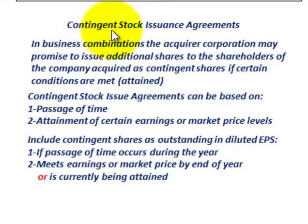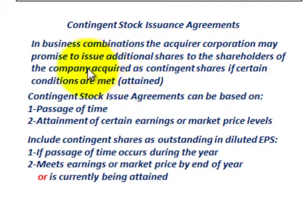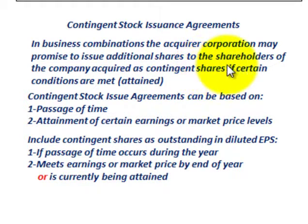Let's look at contingent stock issuance agreements. In business combinations, the acquiring corporation — in this case Corporation A — may promise to issue additional shares to the shareholders of the company being acquired, which here is Company B. Those additional shares of stock are called contingent shares, and they would be issued if certain conditions are met or attained.